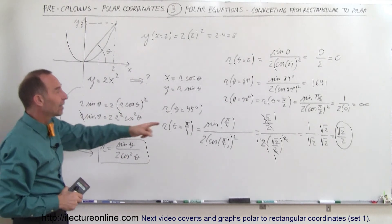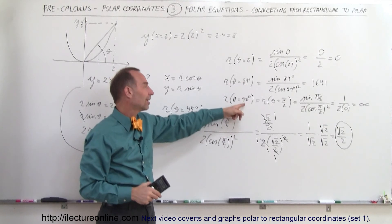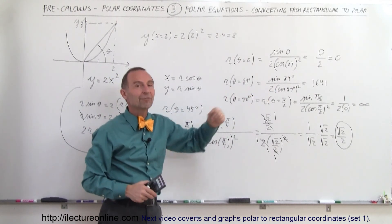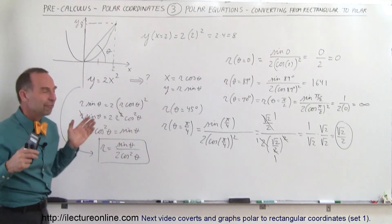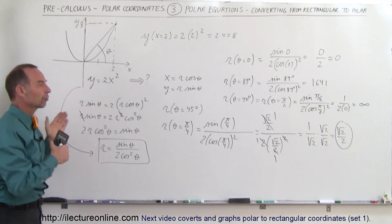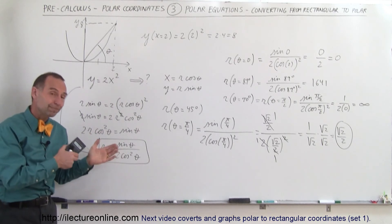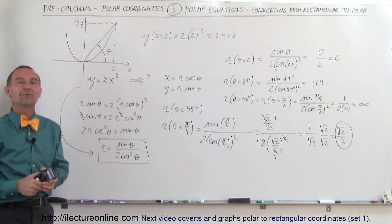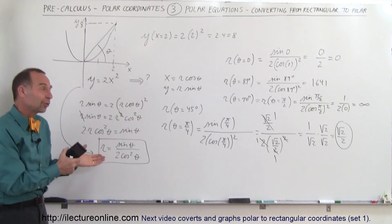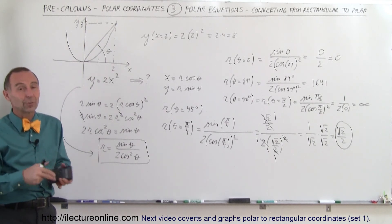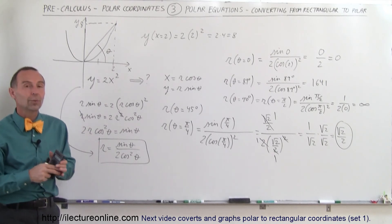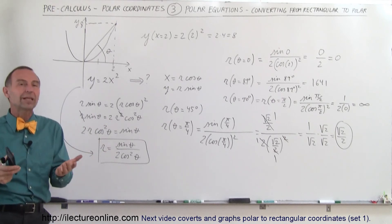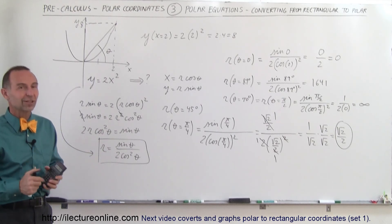Only when theta is exactly equal to pi over 2 or 90 degrees is r infinity; for anything less, r may be very large but not infinite. It's interesting to look at evaluating and graphing polar coordinates versus Cartesian coordinates. Once you get some practice it's not so confusing. We're going to show a bunch of examples so you can feel comfortable with converting from Cartesian to polar and evaluating these polar coordinate equations.